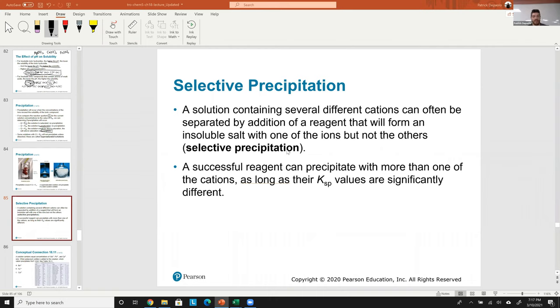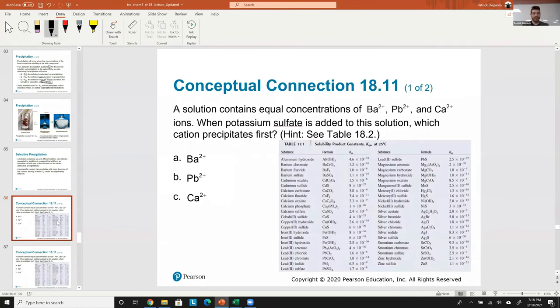That's why we ever gotten a call or email or notice in the mail that there's too much lead in your water. The way they figure that out is by taking a sample of it. And well, the way they used to do it is by selective precipitation. These are very basic experiments. Now you just put a probe in there and detects lead levels. Very easy. But back in the day, they used to do it this way. Let's do an example. And I'll walk you through this one. So a solution contains equal concentrations of barium, lead, and calcium. When potassium sulfate is added to the solution, which cation precipitates first?